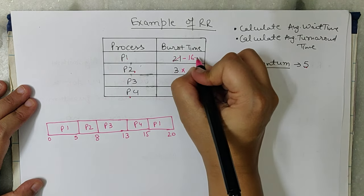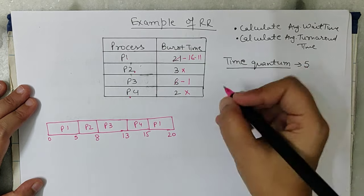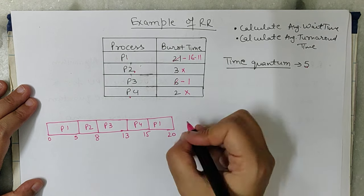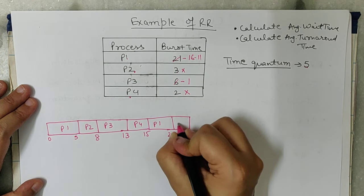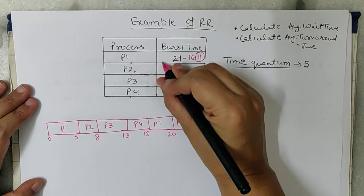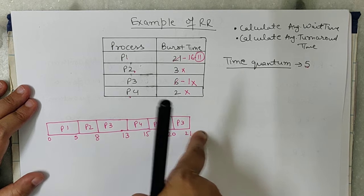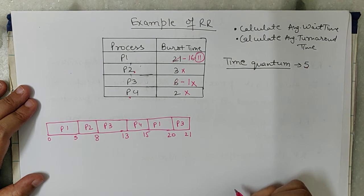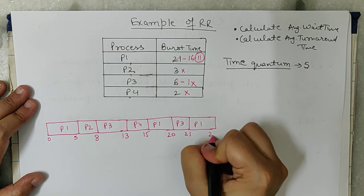Now P1 gets the CPU again for 5 minutes: 15 plus 5 equals 20. P1 had 16 remaining, so after getting 5 minutes it now has 11 remaining. P2 is not in the queue. P3 is in the queue and only wants 1 more minute, so P3 runs from 20 to 21. Now only P1 is left. We have to continue giving it slots of 5 minutes as per the Round Robin algorithm, so P1 gets 21 to 26.